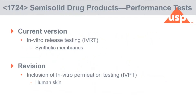This is the reason for the major revision of Chapter 1724. Right now, the current official version discusses only in vitro release testing where you use the synthetic membrane. Because of all the discussions on sunscreens and other products, it was decided to revise the chapter to include the in vitro permeation test, to include the equipment, to include the procedures. And in this case, we are going to use human skin.